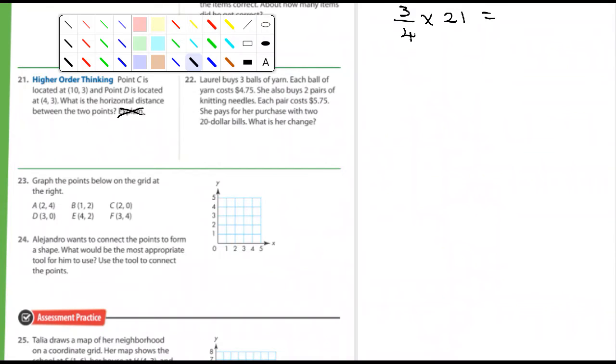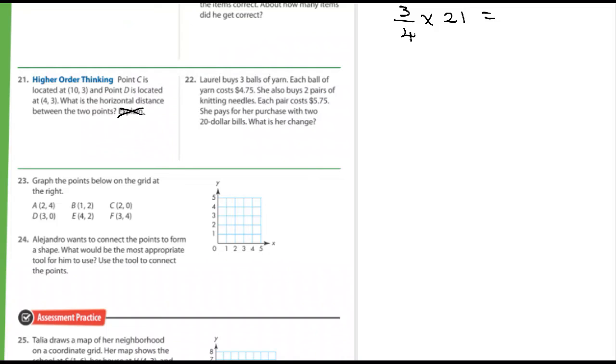Number 22, Laura buys three balls of yarn. Each ball costs $4.75. She buys two pairs of knitting needles. Each pair costs $5.75. She pays for her purchase with two $20 bills. What's her change? Well, you guys can do that. Figure out how much she spent and she paid, she had two $20 bills. What change does she get back? You can certainly answer that question.